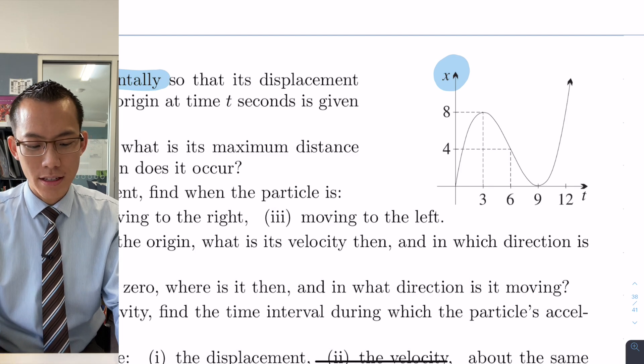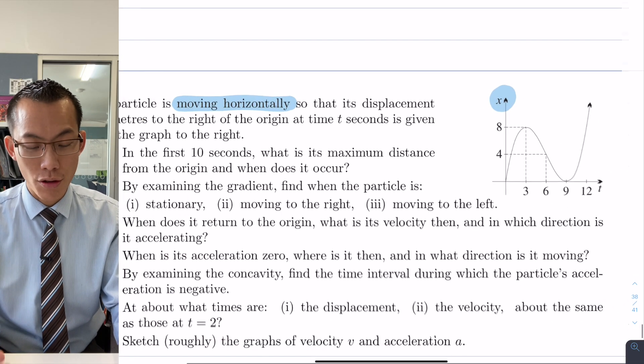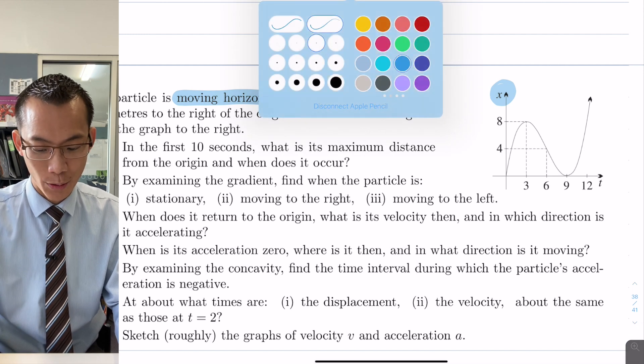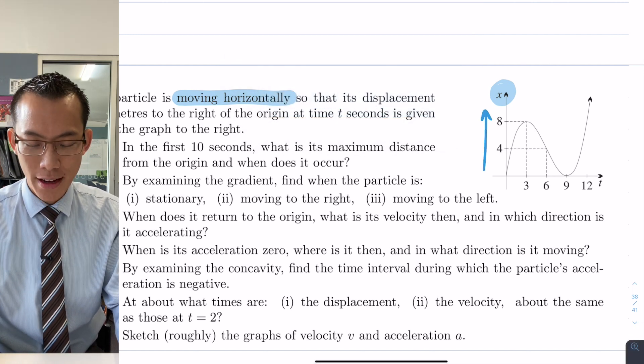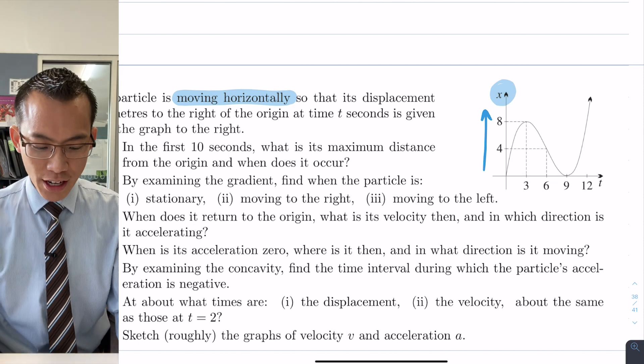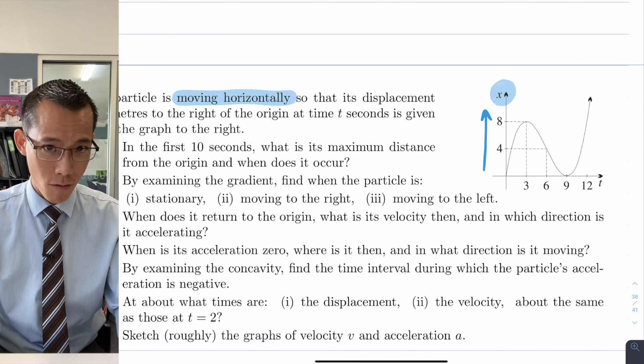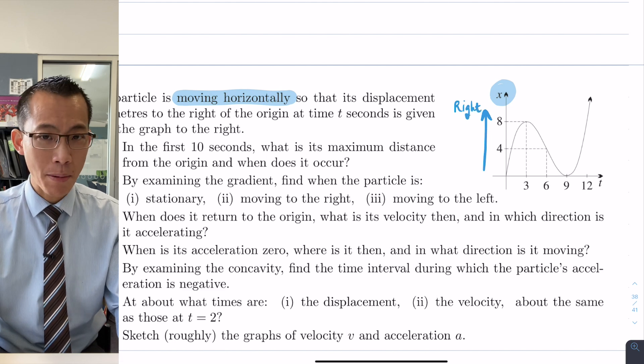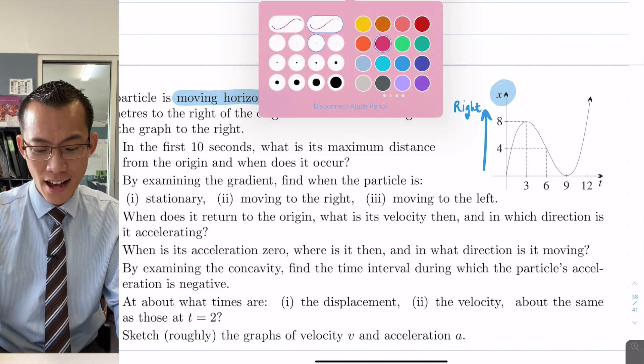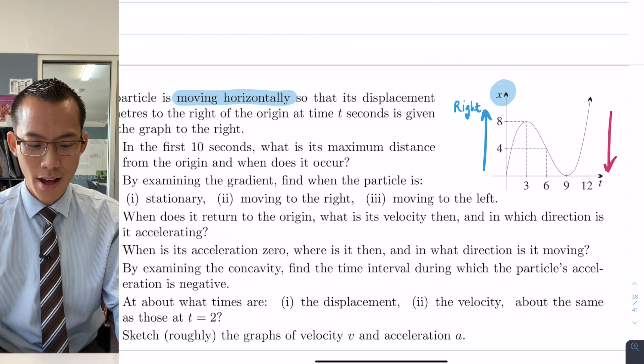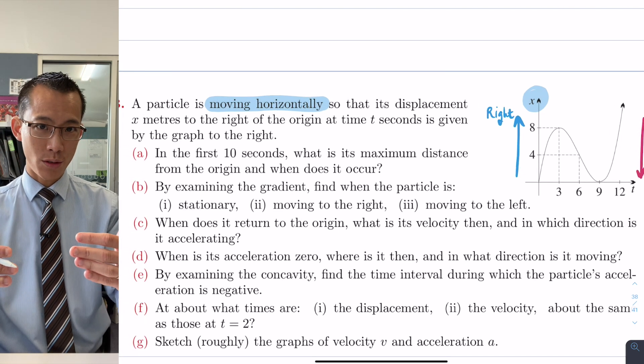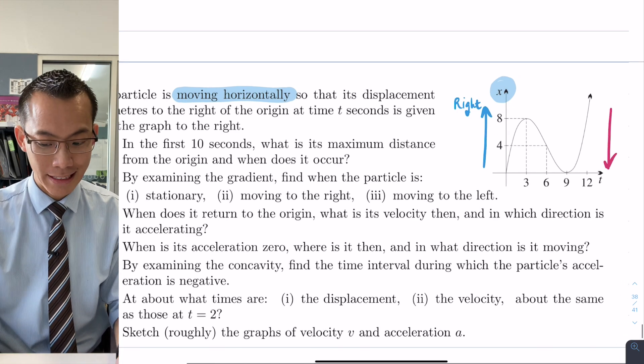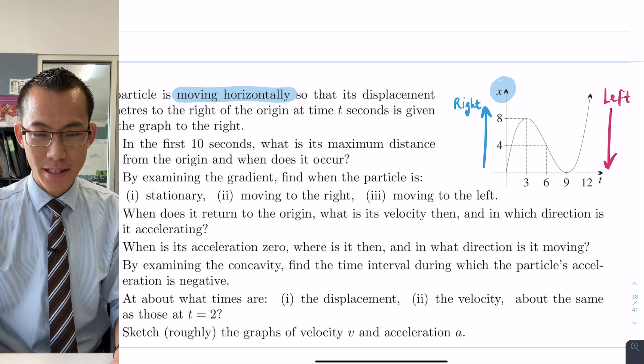So what it's saying is displacement is measured to the right of the origin, so when you are moving, and to get ready for this it's weird, when you are moving up in terms of the graph the actual particle is moving to the right. So up means to the right and by contrast if you are moving down on the graph like so, because that means you're moving closer to the origin from the right hand side, you're actually moving left.